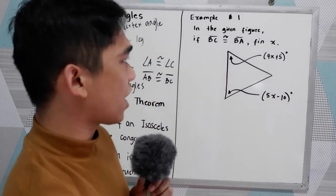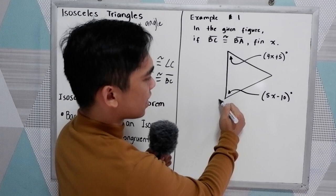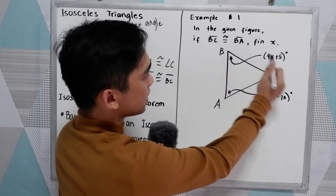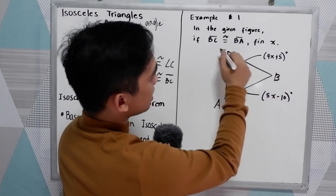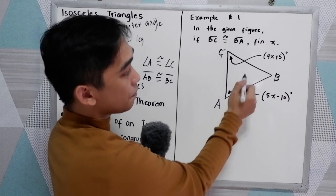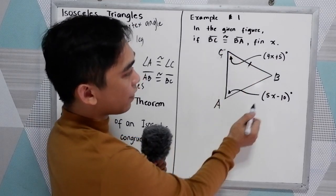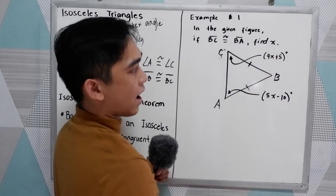Now let's have our first example. In the figure, here, let's say ABC. So ABC. In the given figure, if BC, BC is congruent to BA. Find X.